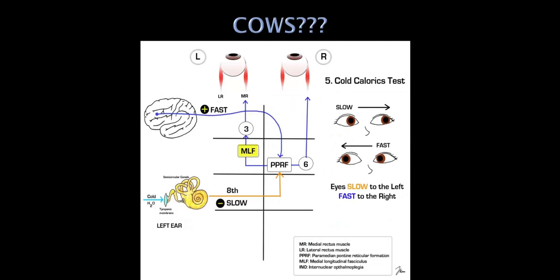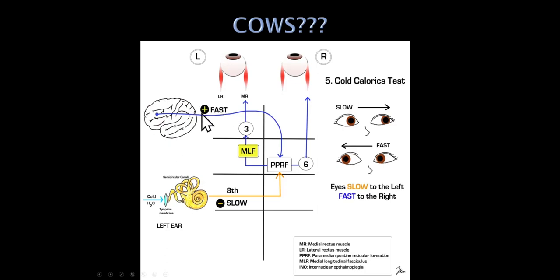If someone has a lesion in the pons and you do cold caloric testing, they may have an internuclear ophthalmoplegia — only one eye is moving. If you do cold calorics in someone with a metabolic coma, the cortical neurons are knocked out — so you're not going to get the fast phase of the nystagmus. For example, in hepatic encephalopathy, you put cold water in the left ear, the eyes will come slowly to the left because the brainstem is working fine, but there will be no fast phase because the frontal eye fields aren't activating.